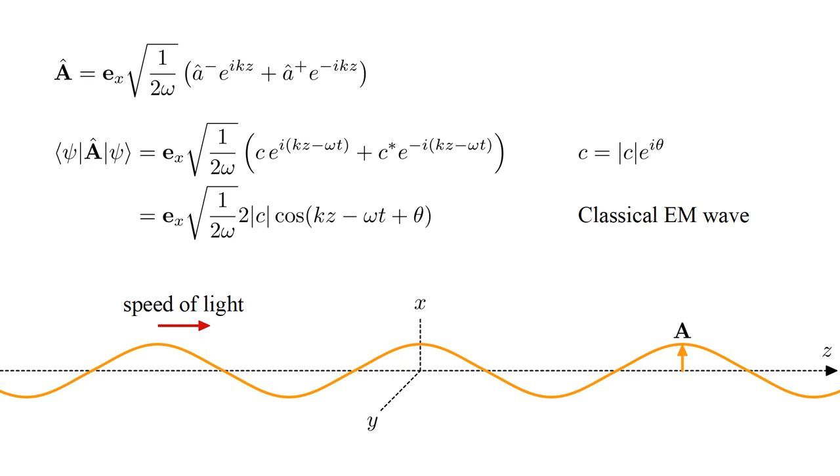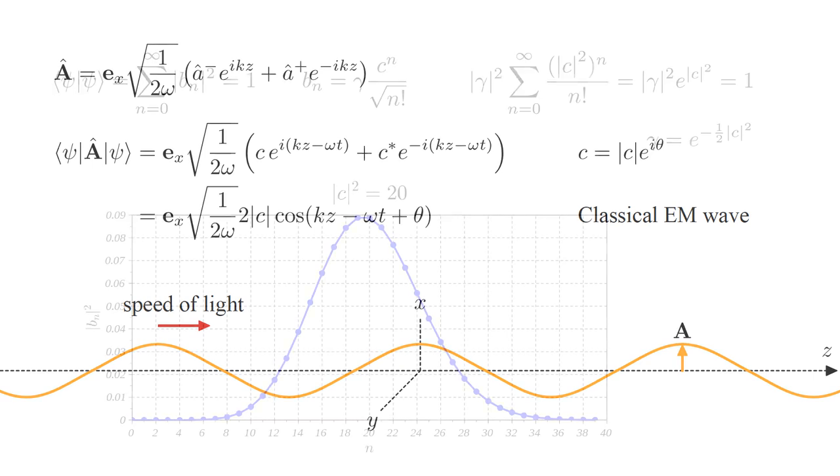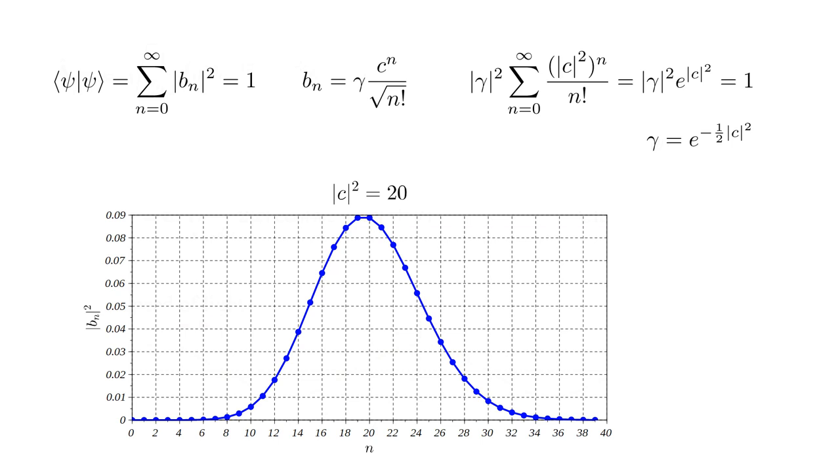Now, this does not mean that the quantum field is identical to the classical field, only that, on average, a measurement of the quantum field will correspond to the classical field. In fact, we have already seen that the amplitude of the quantum field must be fuzzy in some sense, because it does not contain a precise number of photons.